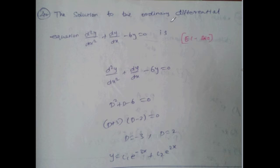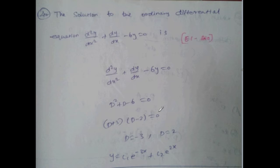The solution to the ordinary differential equation d²y/dx² plus dy/dx minus 6y equal to 0. This question is from EC 2010. Rewriting: d²y/dx² means D², dy/dx means D. So D² plus D minus 6y equal to 0, which factors as (D+3)(D-2)y equal to 0.